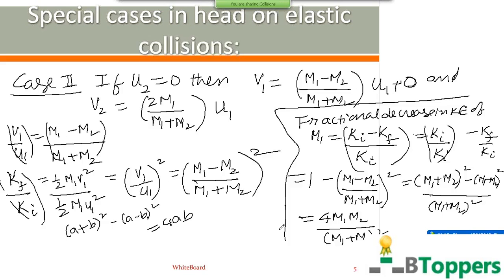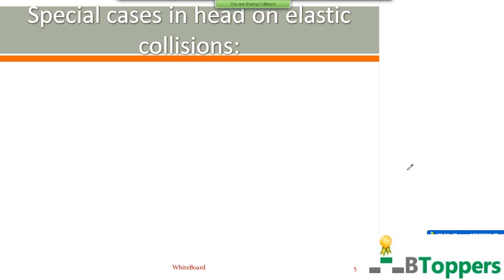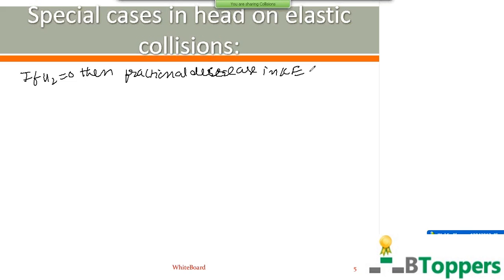The fractional decrease in kinetic energy of M1 transferred to M2 equals Ki minus Kf divided by Ki, which gives 1 minus Kf over Ki, equals 1 minus M1 minus M2 over M1 plus M2 whole squared. Using the algebraic identity, this becomes M1 plus M2 whole squared minus M1 minus M2 whole squared over M1 plus M2 whole squared, which simplifies to 4M1 M2 over M1 plus M2 whole squared. This is the fractional decrease in kinetic energy of M1 transferred to M2 when M2 is initially at rest.